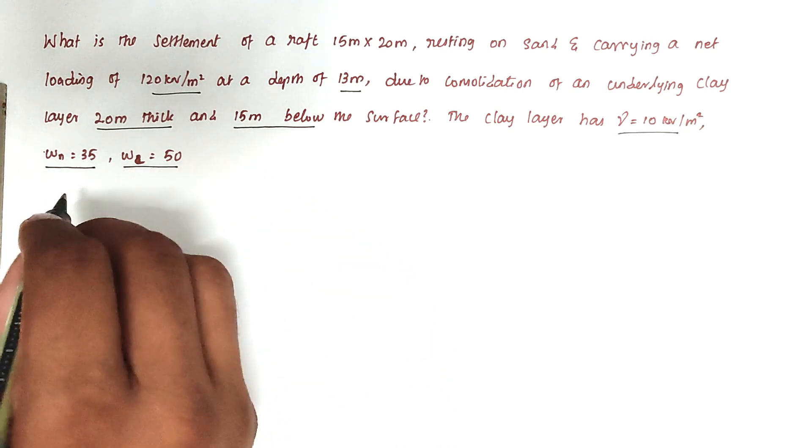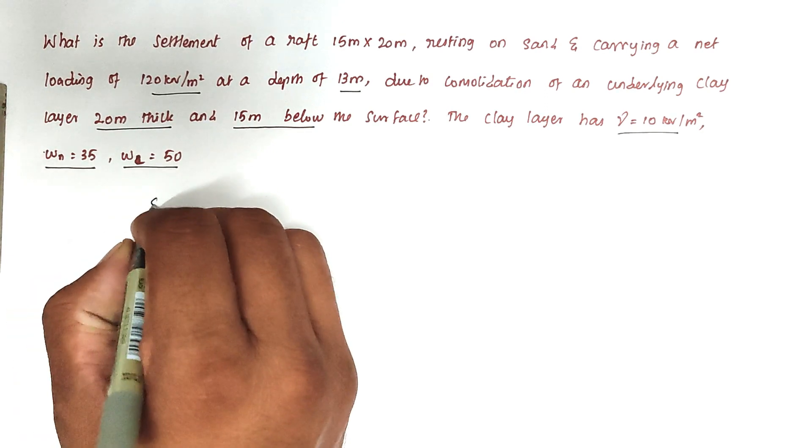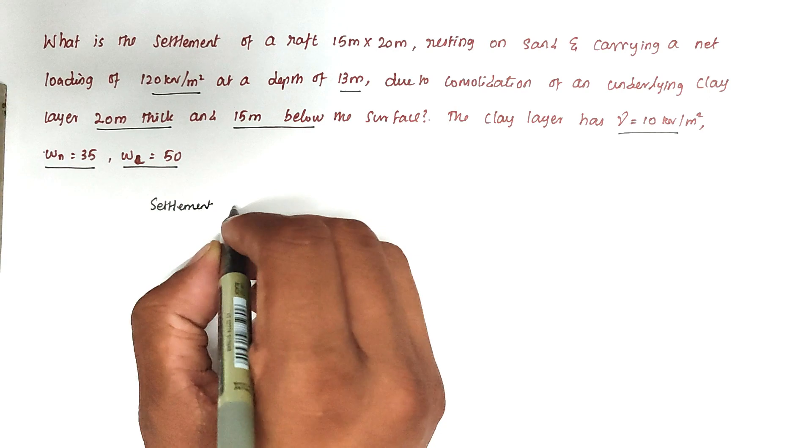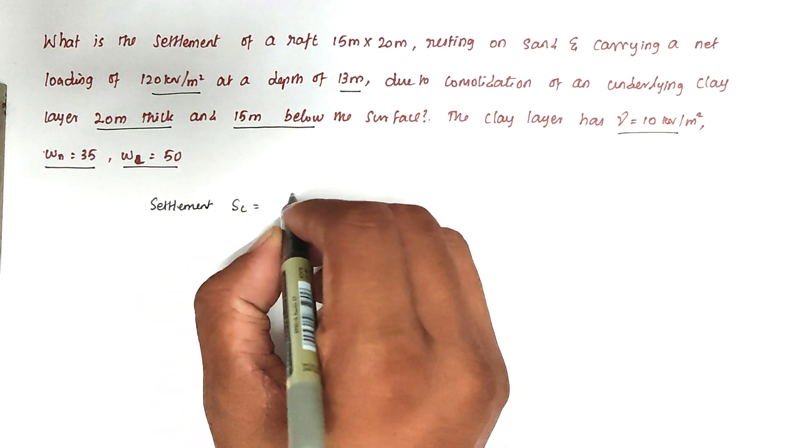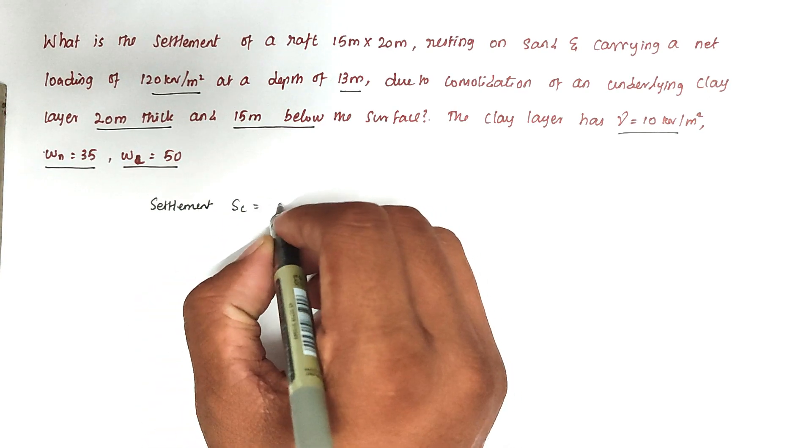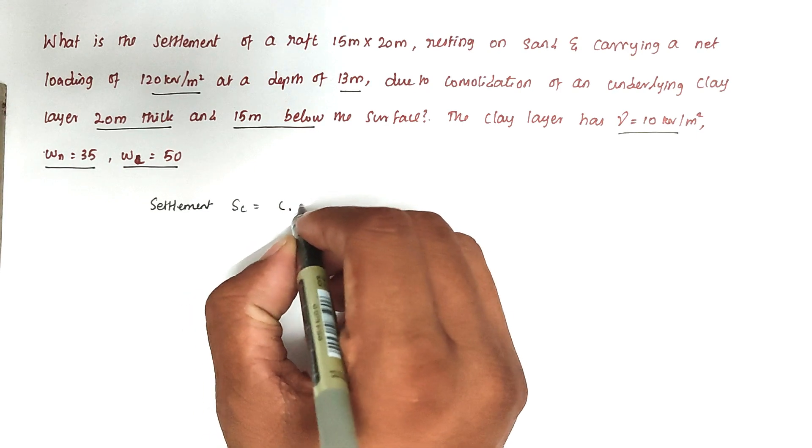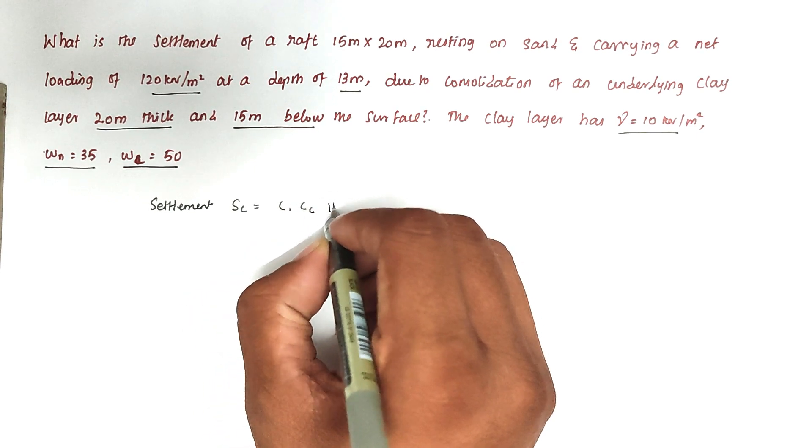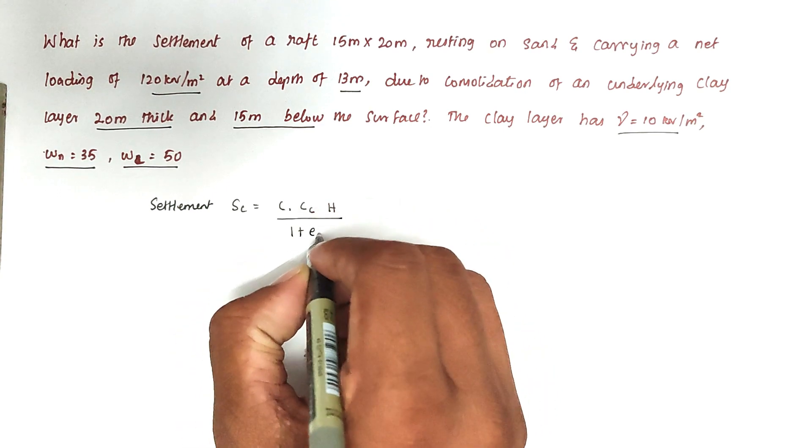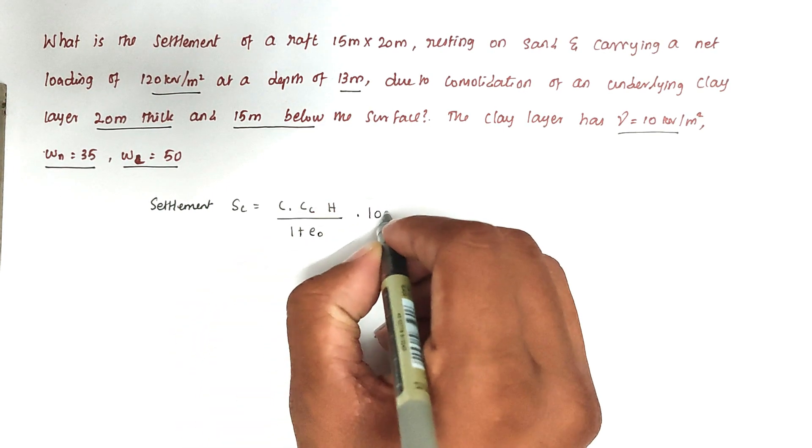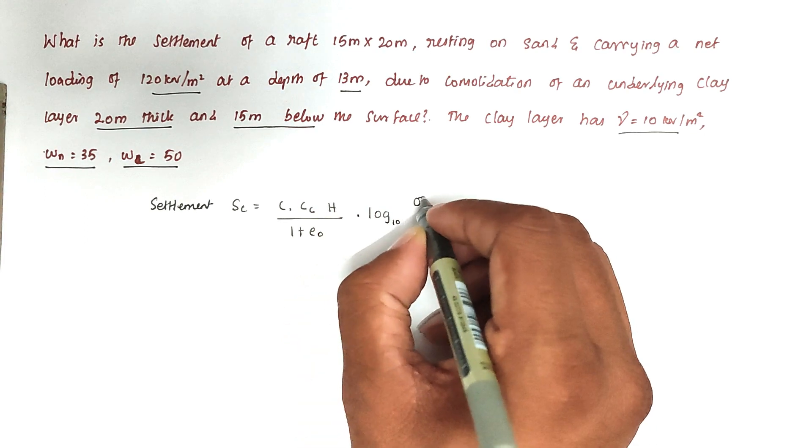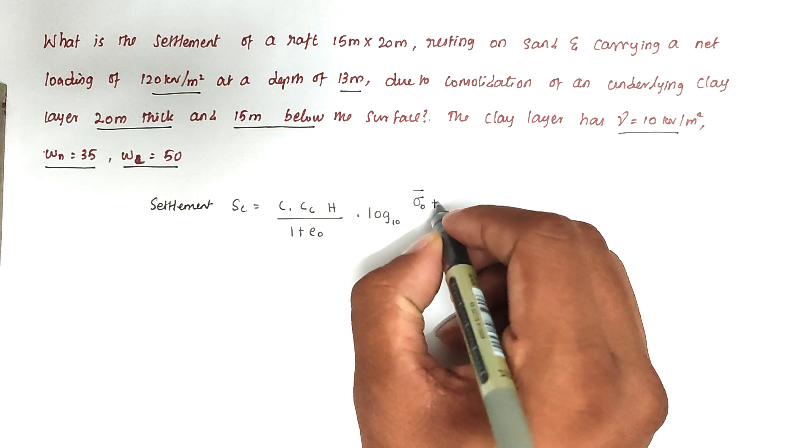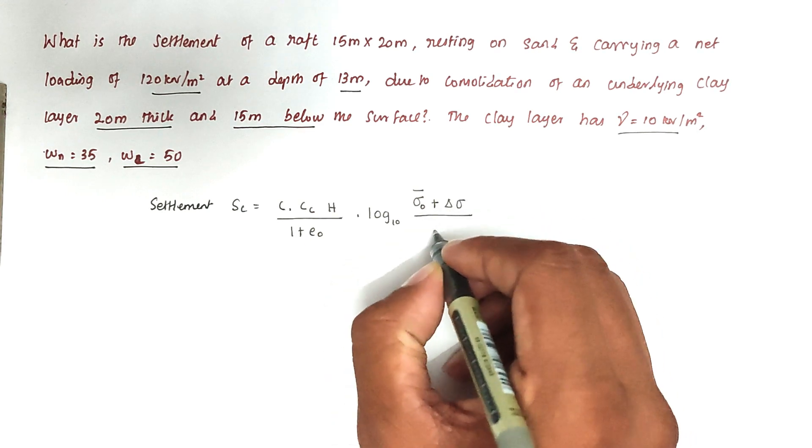So now the consolidation settlement SC equals the formula: C times CC times H divided by 1 plus E naught, times log base 10 of sigma naught plus del sigma divided by sigma naught.